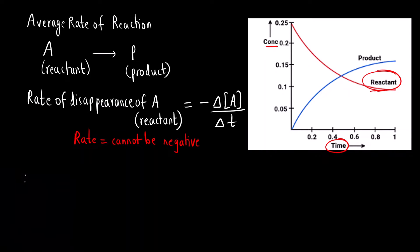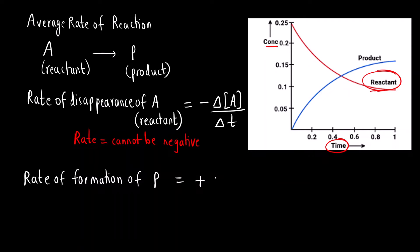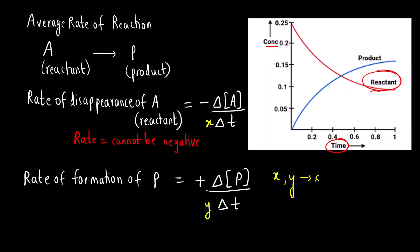Now suppose the question asks us to find out the average rate of appearance of product, or formation of product. Here there will be no negative sign because the concentration of product is increasing, so final minus initial value will be positive. We write: change in concentration of product divided by delta t. Also, if there is any stoichiometric coefficient, we write it in the denominator — x and y are the stoichiometric coefficients of the reactant or product in the balanced equation.